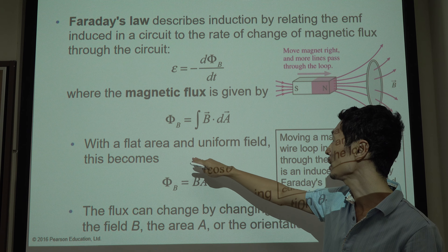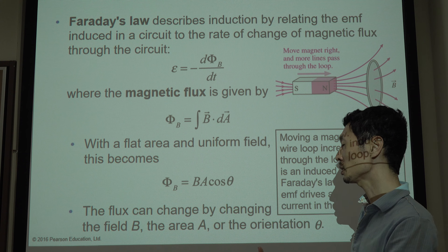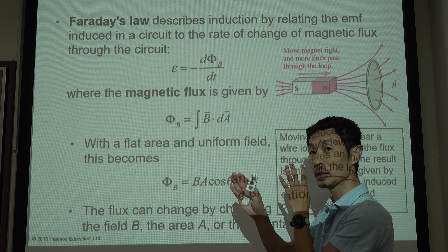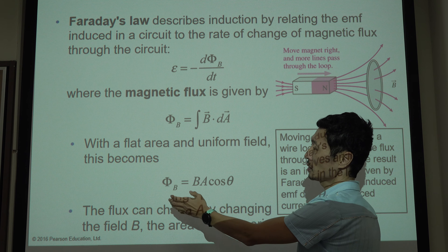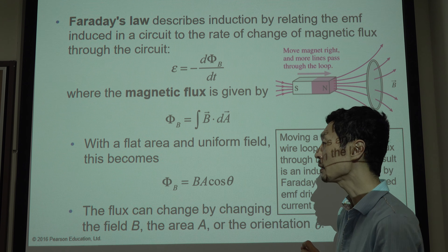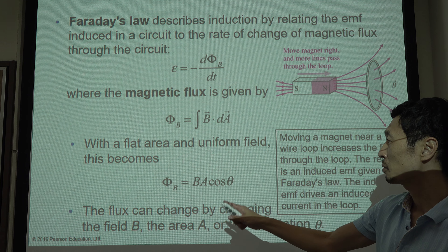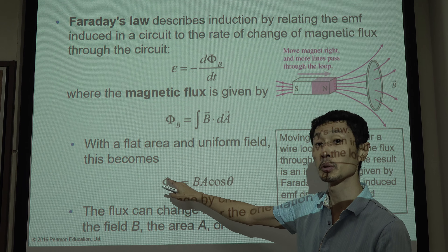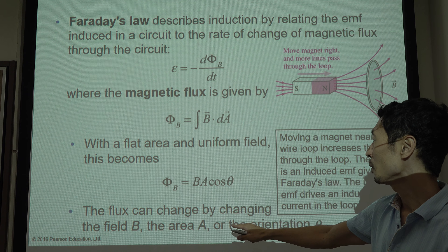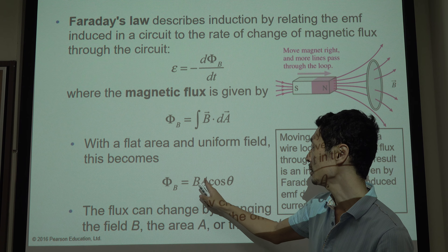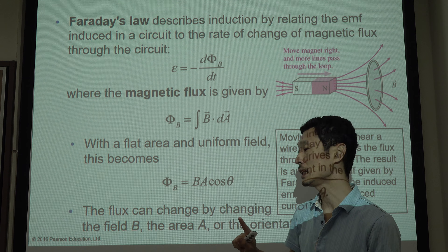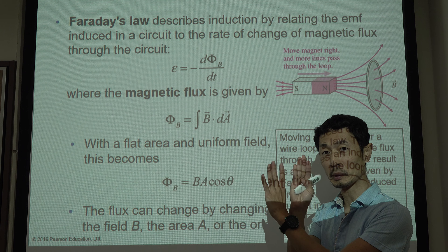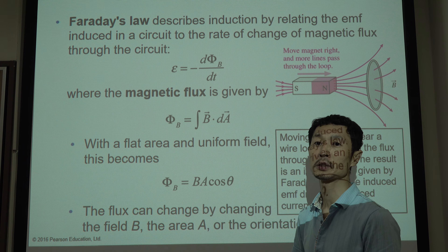Magnetic flux is defined by the magnetic field times area, integrated. If it is a flat area and a uniform magnetic field, then it is magnetic field times area, and if there is an angle, you need cos θ, which determines the magnetic flux. This flux can change by changing the field B — if you change B, then flux changes. Or if you change the area, the flux also changes. Or the orientation — if you change the angle of the magnetic field, the magnetic flux also changes.